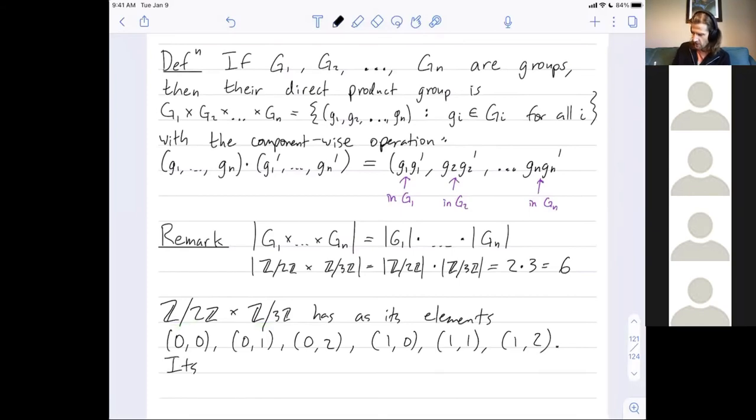And then its operation looks like... Let's just do a sample combination. Let's combine (1,2) maybe with itself. So, first I combine 1 and 1 in Z mod 2Z, so I get 1 plus 1 mod 2. Then I combine 2 and 2 in the second group Z mod 3Z, so that's 2 plus 2 mod 3. So, 1 plus 1 mod 2 is 2 mod 2, which is 0, and 2 plus 2 mod 3 is 4 mod 3, which is 1.